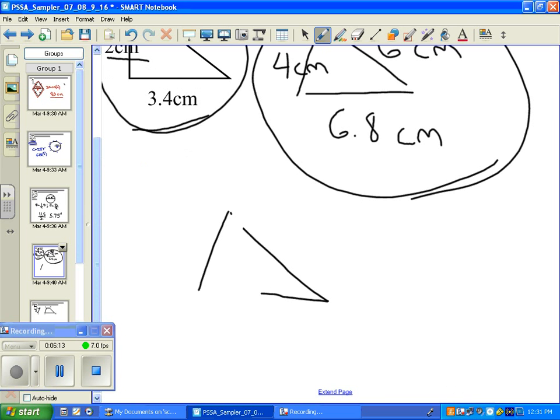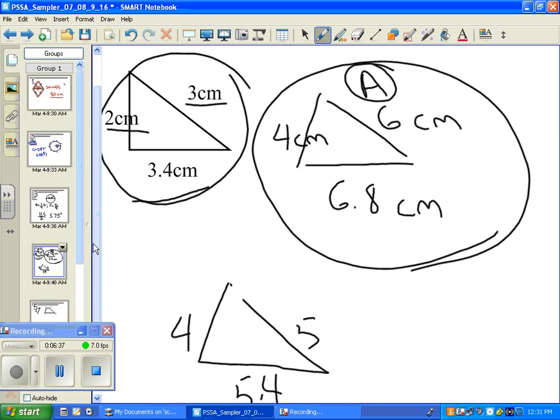Now some of these other ones are worth looking at just for the point of instruction. Letter B says 4, 5, and 5.4. Well, if you look at the original, we can see that they've added 2. They've taken all of the sides and they've added 2.